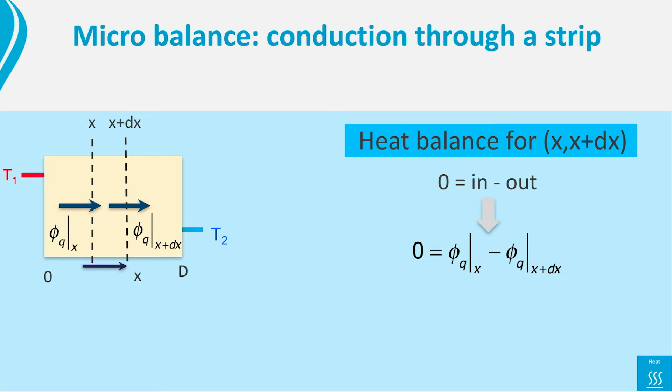This equation becomes a microbalance if we let dx become very small. Mathematically, this leads us to the derivative. As a side step, recall from your calculus that the derivative of a function f is by definition f prime is the limit of dx to 0 of f at x plus dx minus f at x divided by dx.